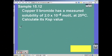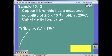So here we have copper II bromide. First, you need to write your dissociation equation. Ignore the solid. They gave us the solubility of that salt, which is x.